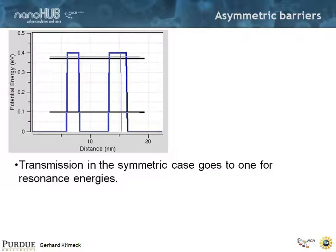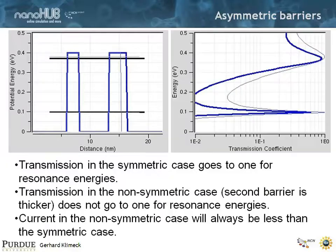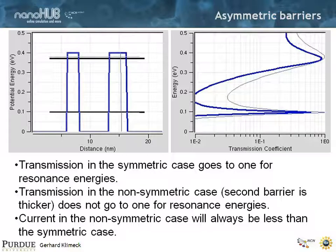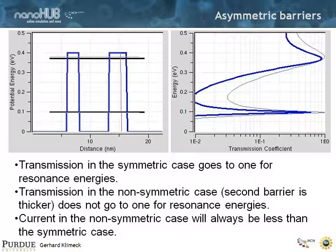Now let's make the structure asymmetric — we keep the left barrier the same but make the structure asymmetric on the right. What happens is that the transmission coefficient for the asymmetric structure no longer goes to one. So you can have perfect transmission only for perfectly symmetric structures. Let me repeat that: you can have perfect transmission only for symmetric structures.